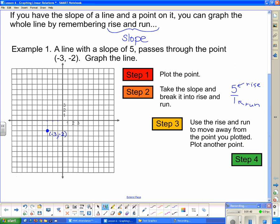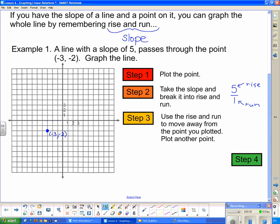Step three says use the rise and run to move away from the point you plotted and plot another point. So the point I plotted, I have to move away from it using rise and run. So I have to rise five and run one. So I go one, two, three, four, five up from the point I plotted and one forward. Always run forward so you don't trip over everything. You don't want to run backwards. OK, I've got another point. Looking good so far.